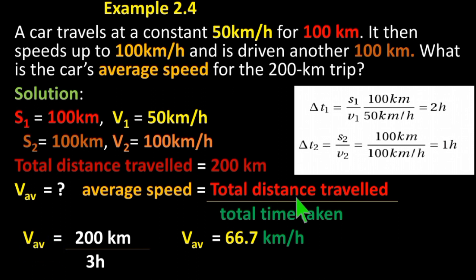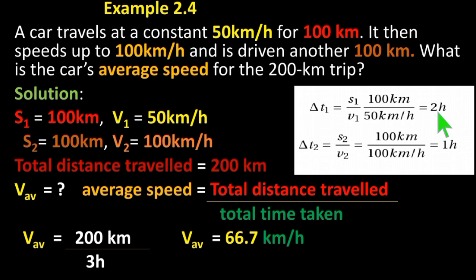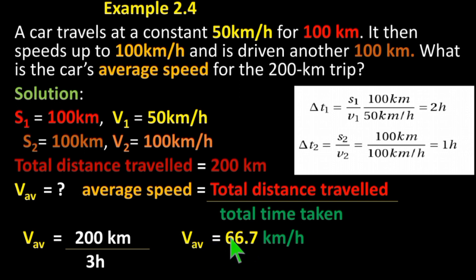Average speed equals total distance traveled, 200 kilometers, divided by total time taken: 2 hours plus 1 hour equals 3 hours. Therefore, average speed equals 200 km divided by 3 hours, which equals approximately 66.7 kilometers per hour.